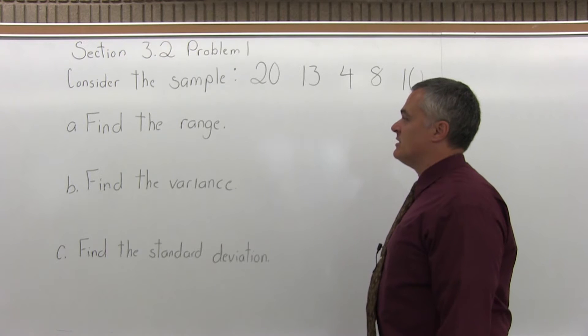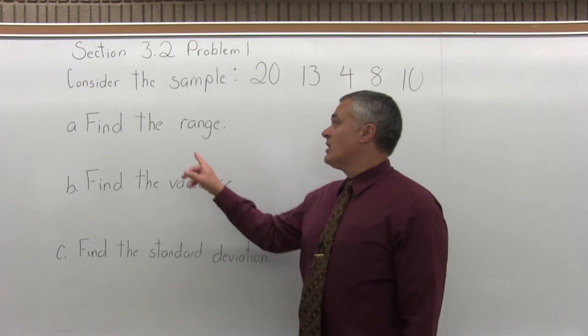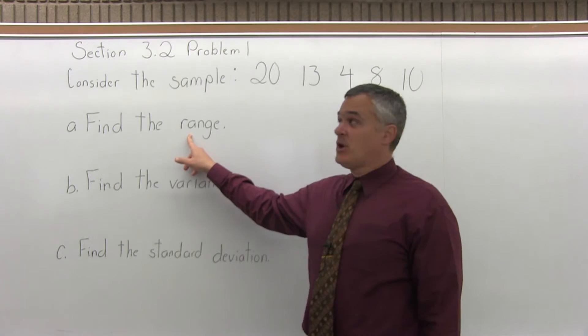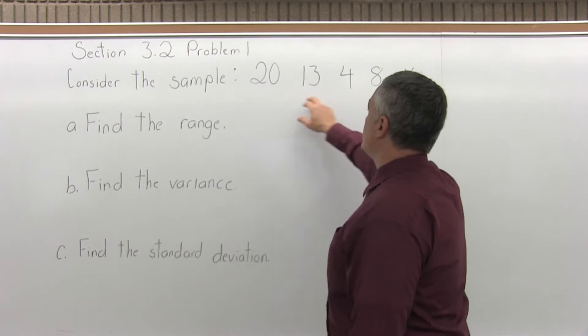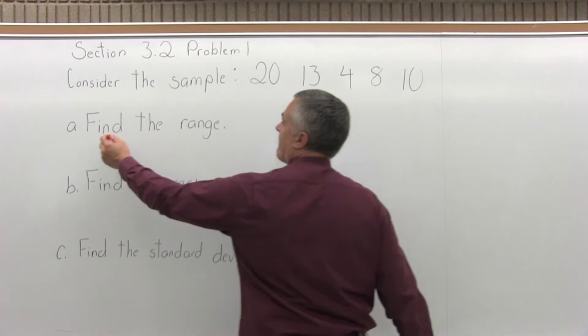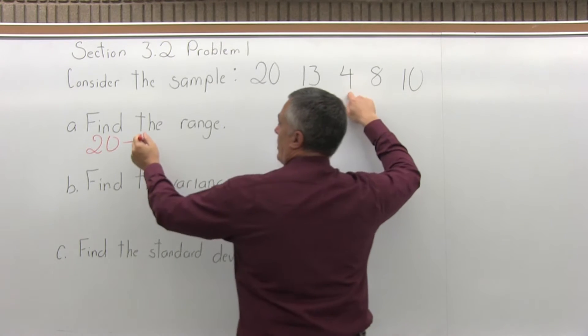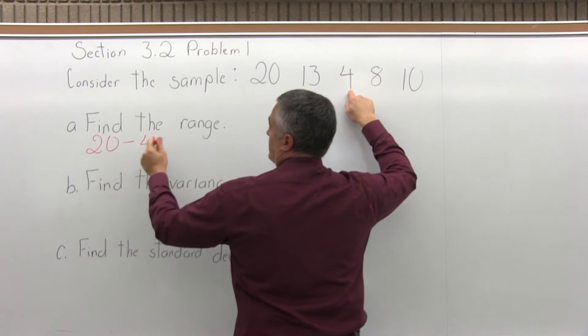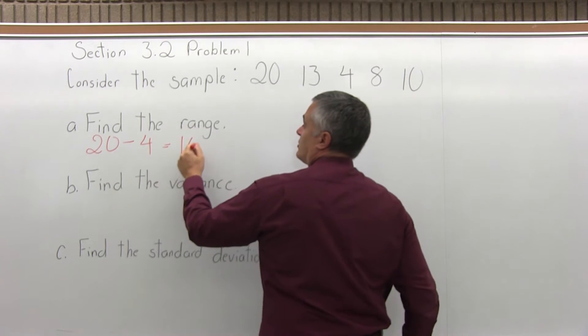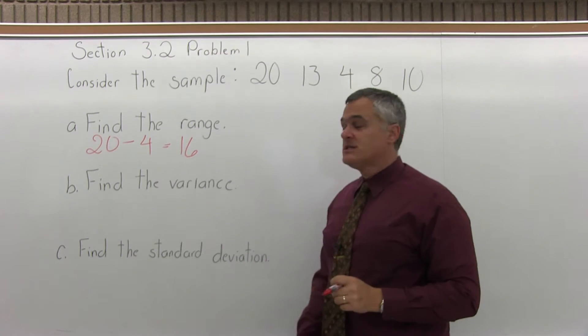So the range is simply the largest value minus the smallest value. The largest value is 20, minus the smallest value is 4, and 20 minus 4 is 16. So the range is 16. That's easy enough.